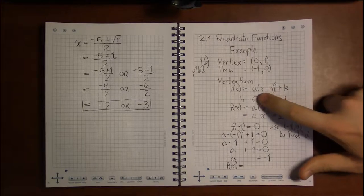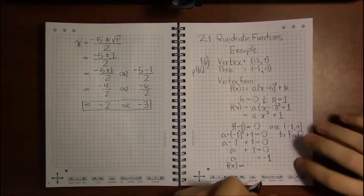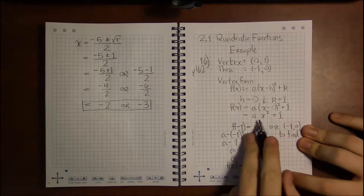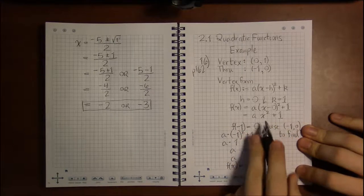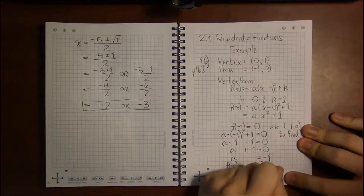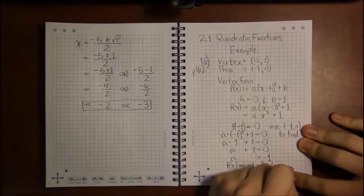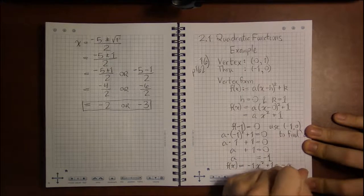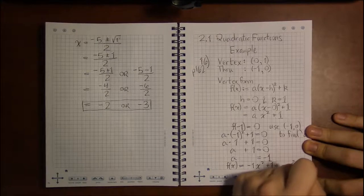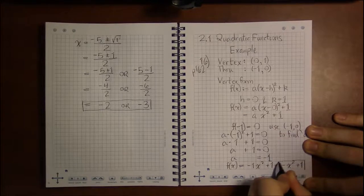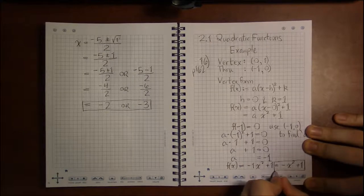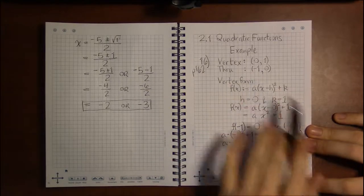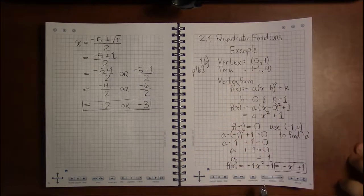Well, same thing here. We're going to leave x alone. We're not going to plug in any numbers for x, but we will plug in numbers for everything else. So f is -1 times, and I can even use this simplified version, x squared plus 1, and -1 times x squared we just simplify that to -x² + 1. That's our quadratic which has a vertex at (0, 1) and will pass through the point (-1, 0).